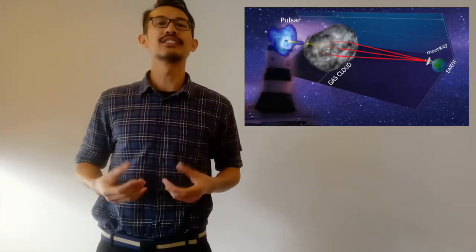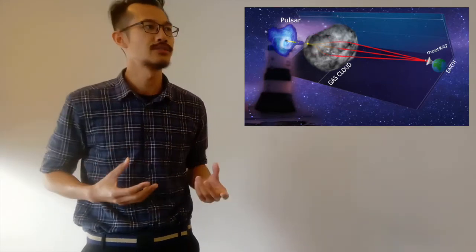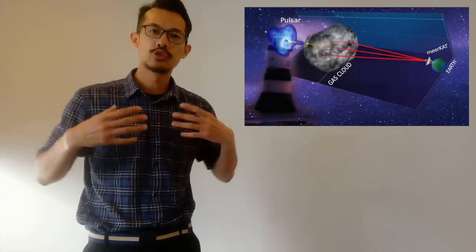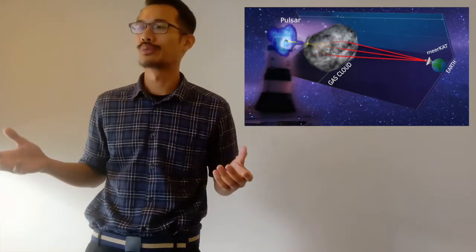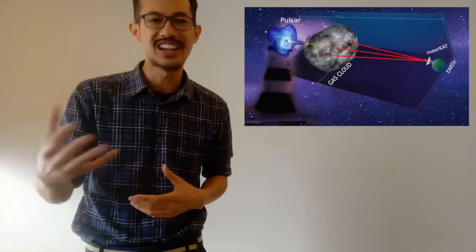By using one of the most sensitive radio telescopes in the southern hemisphere, called the Meerkat, to observe a remarkably bright nearby pulsar named J0437-4715. I know, it's not a very flattering name.